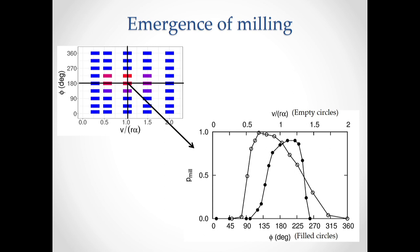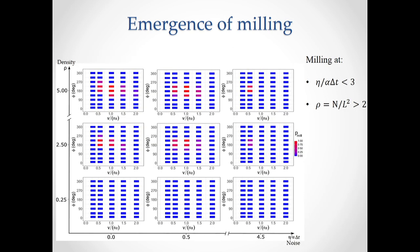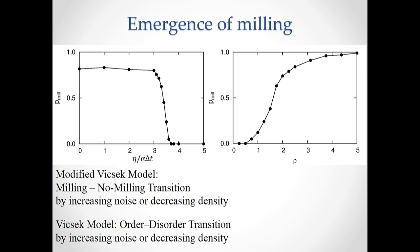A bit more in detail, here we can see the dependence on the ratio of speed to angular velocity in empty circles, and the dependence on the field of view in full circles. Varying also the particle density and the noise, we get a bigger picture from which we can conclude that we need not too high noise — obviously — and also the density has to be high enough in order to get milling. We see the milling to no-milling transition by either increasing noise or decreasing density, which reminds us of the order-disorder transition in the Vicsek model.